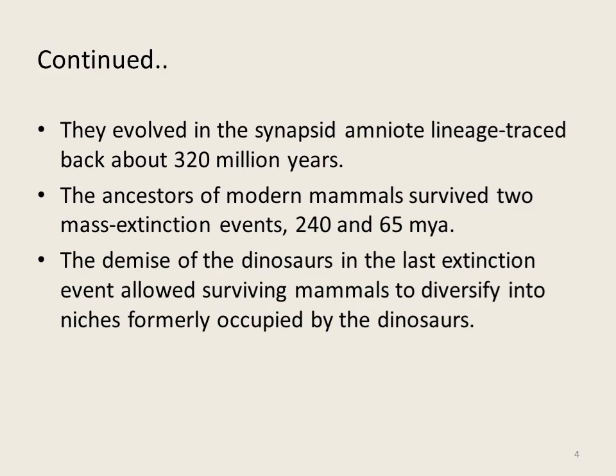Modern mammals have survived some major mass extinction events — we talk about two major events, at about 240 million years and 65 million years ago. Especially the last extinction event around 65 million years ago, many reptilian species became extinct, including the dinosaurs. After their extinction, many habitats and terrestrial areas became available which supported mammalian survival, evolution, and diversification.